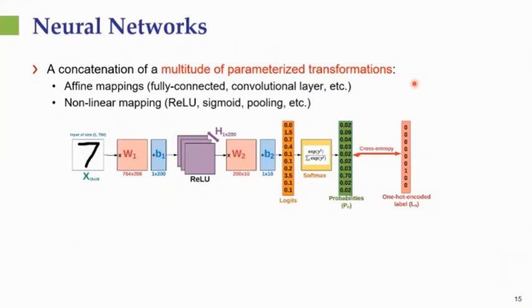What are those neural networks? In the end, those neural networks are a concatenation of a multitude of parameterized transformations. These are divided into affine mappings, such as fully connected layers, convolutional layers, and nonlinear activations, such as ReLU and sigmoid. And by concatenating a set of those affine mappings activation, affine mapping activation, we get an overall highly parameterized function which defines the network mapping.